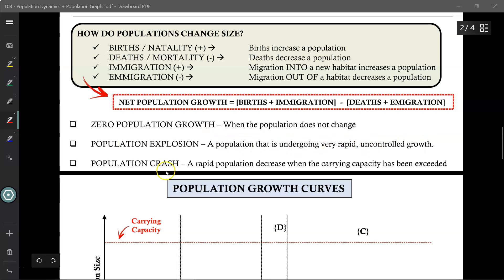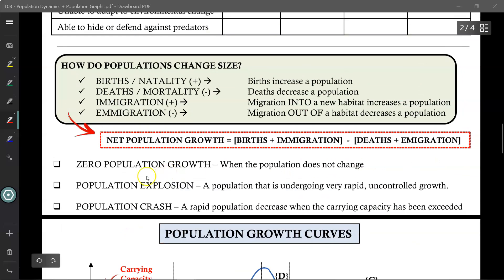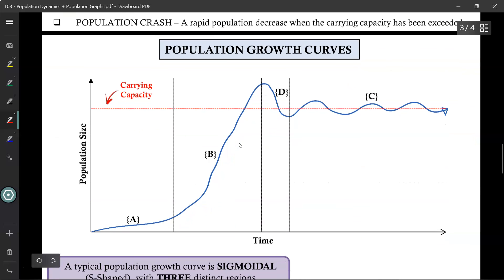Finally, a population crash occurs when there's an exact opposite, a rapid decrease in your population. Typically, this occurs when the carrying capacity has been exceeded. Now, to help us visualize this information a little bit better, we plot it all onto a population growth curve.